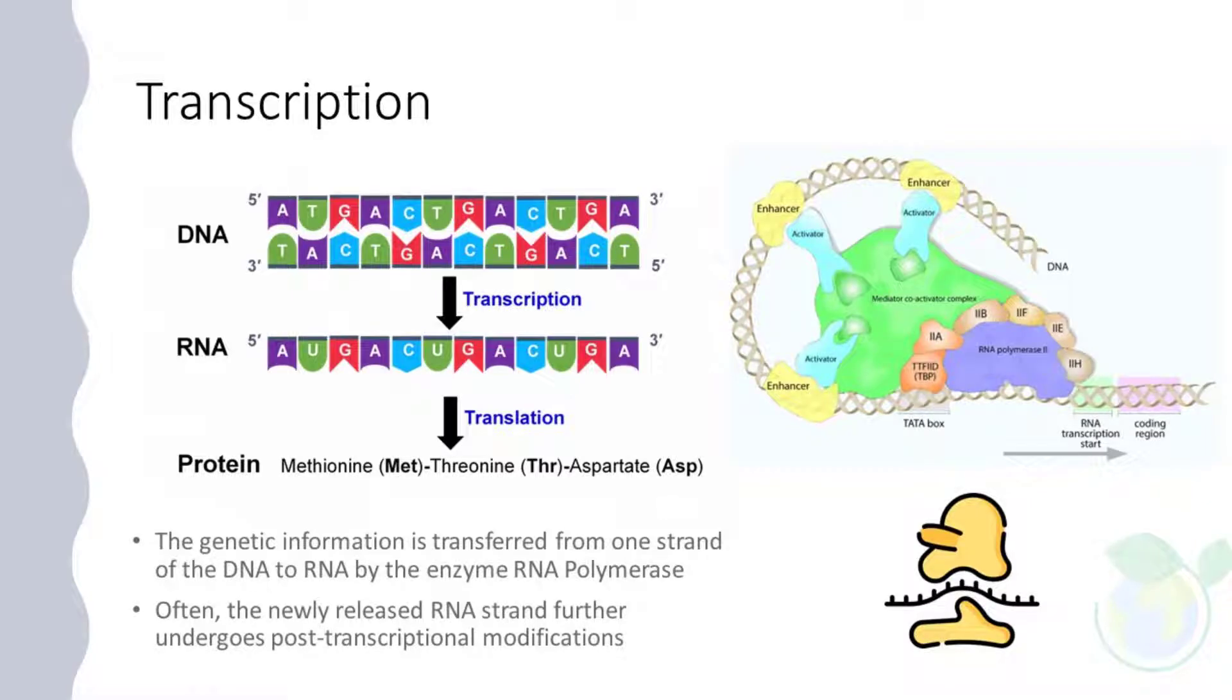Transcription is the process by which the information is transferred from one strand of the DNA to RNA by the enzyme RNA polymerase. The DNA strand which undergoes this process consists of three parts namely promoter, structural gene, and a terminator. The DNA strand that synthesizes the RNA is called the template strand and the other strand is called the coding strand. The DNA-dependent RNA polymerase binds to the promoter and catalyzes the polymerization in the 3' to 5' direction. As it approaches the terminator sequence, it terminates and releases the newly synthesized RNA strand. The newly released RNA strand further undergoes post-transcriptional modifications.